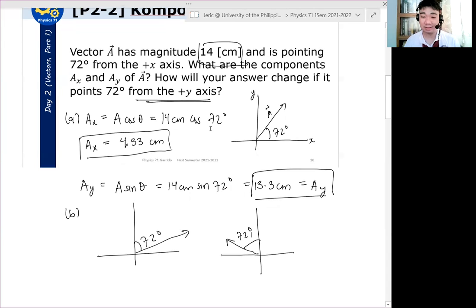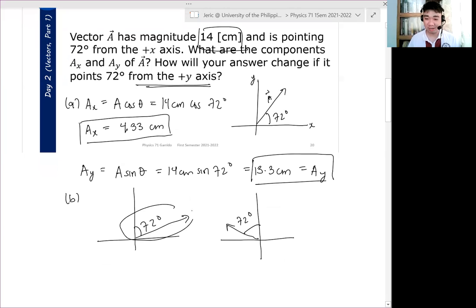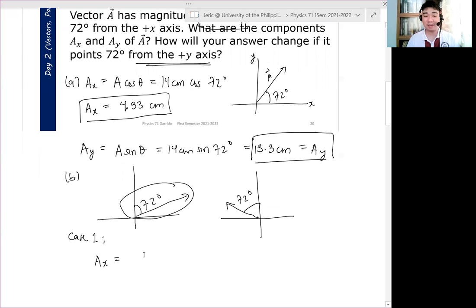But let's say for instance, this is the vector that we want. How would you write it? So here, if you use case one, my Ax now becomes what? It flips, right? So this is 14 cm sine theta, which is just equal to 13.3 centimeters. And then, Ay is just 14 cm cosine theta, which is about 4.33 cm. Okay?